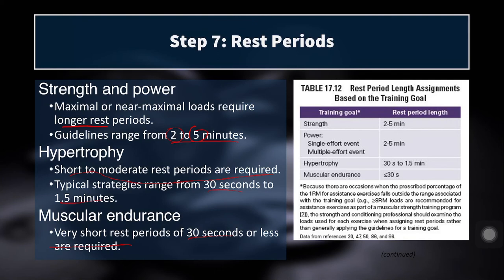For muscular endurance, rest periods as low as 30 seconds can be used, but if you're doing a set of 30 near failure, you won't be able to perform quality reps again after only 30 seconds. Resting longer allows another quality set. You could stop well shy of failure, rest 30 seconds, and go again — a myo-rep style approach to maximize effective reps. But short rest periods are not strictly required for either hypertrophy or muscular endurance; you can shorten rest, but it isn't mandatory.